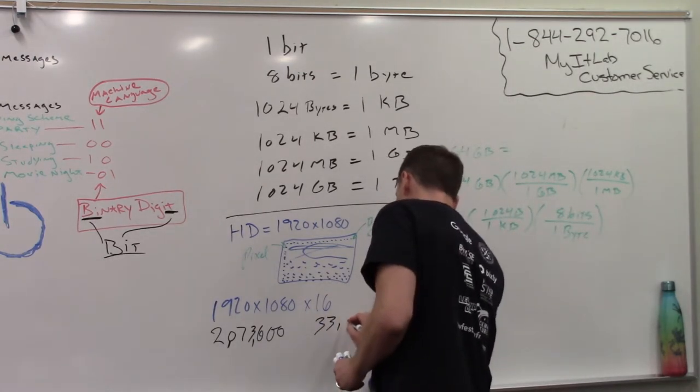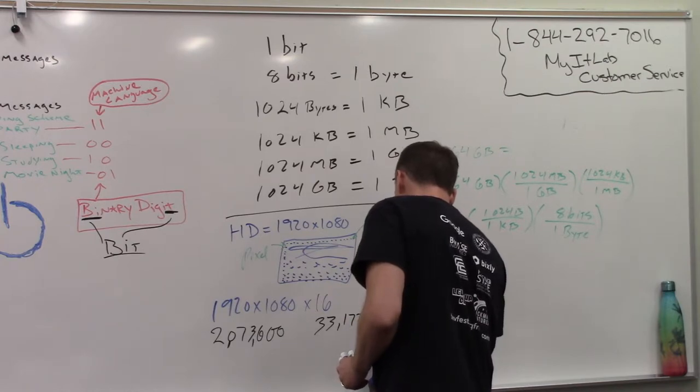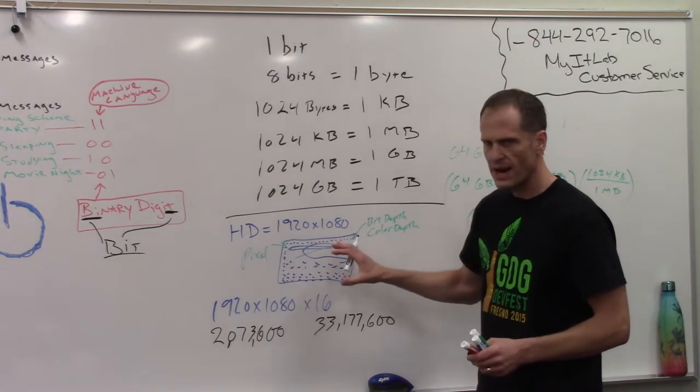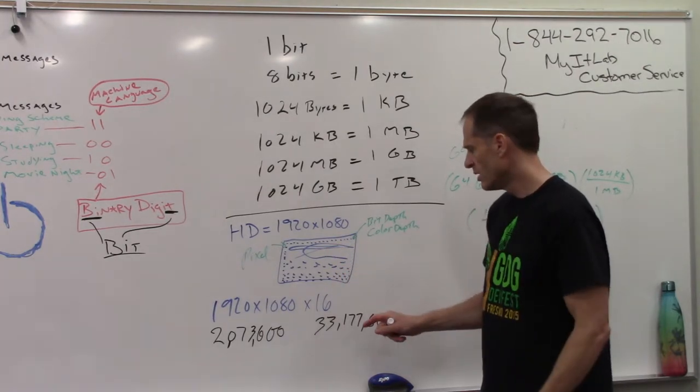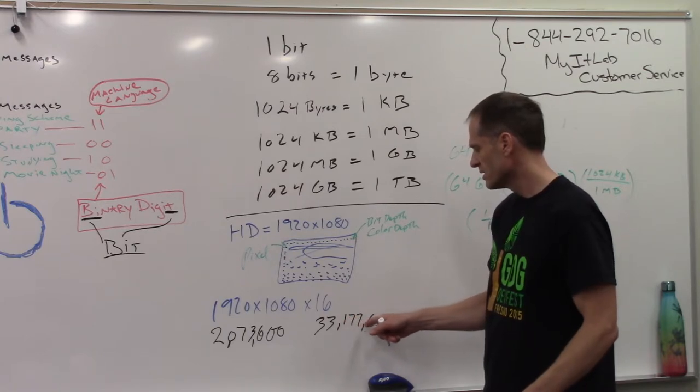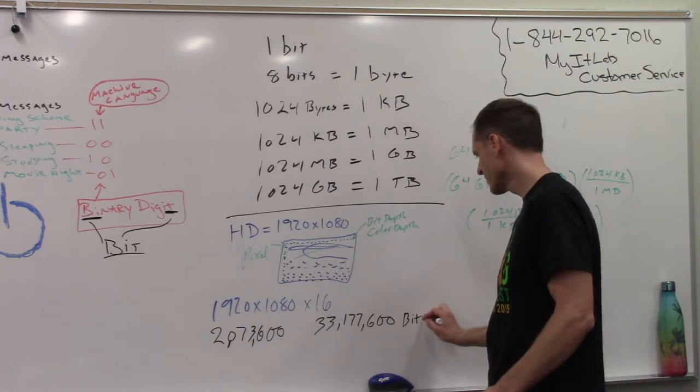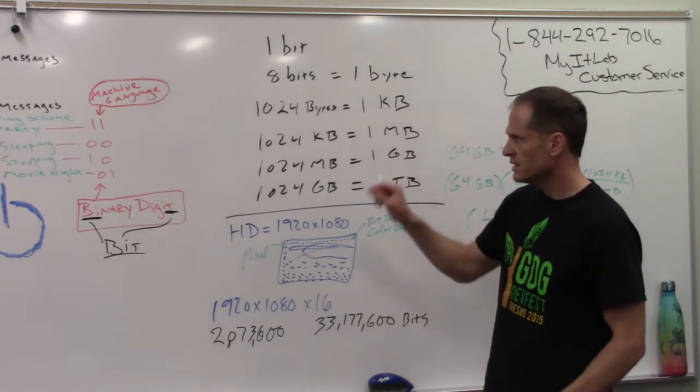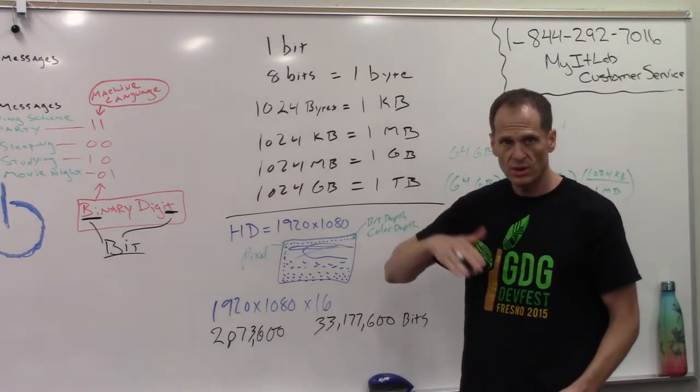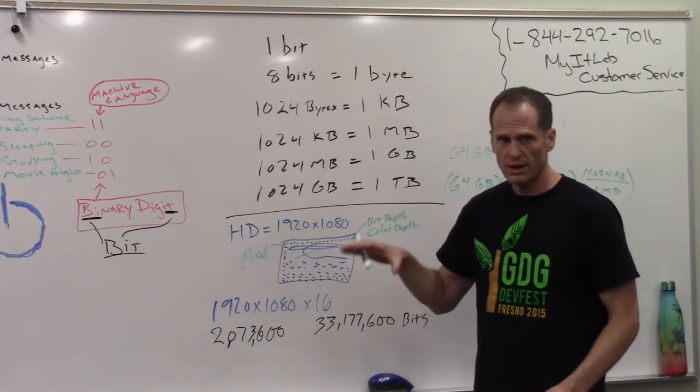So for one frame of video, we're storing 33,177,600 bits. So that many zeros and ones circuits are going into an on-off state to store the data, the information for one frame in a video.